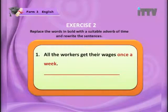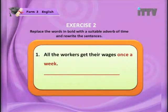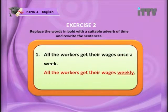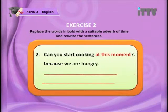Exercise Two: Replace the words in bold with suitable adverbs of time and rewrite the sentences. Number one: 'All the workers get their wages once a week.' Once a week is going to be changed to an adverb of time. The answer: 'All the workers get their wages weekly.' Notice the '-ly' there — that's also a clue that it is an adverb. Number two: 'Can you start cooking at this moment because we are hungry?'